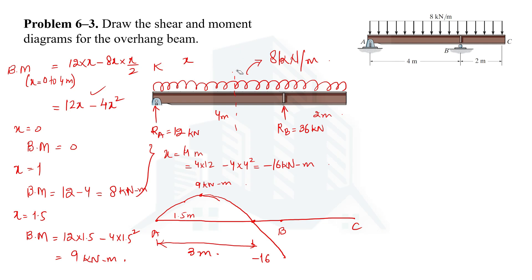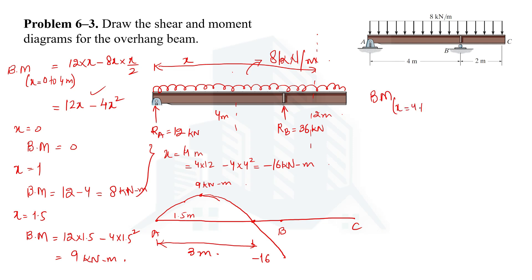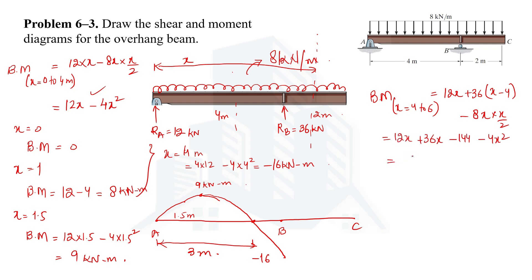For the second portion, x = 4 to 6 m, the bending moment equation includes contributions from RA, RB, and the UDL. RA = 12 gives moment 12x; RB = 36 gives moment 36(x − 4); the UDL gives −4x². Combining: M = 12x + 36(x − 4) − 4x² = 48x − 144 − 4x². At x = 4 m: M = 192 − 144 − 64 = −16 kN·m, confirming continuity.